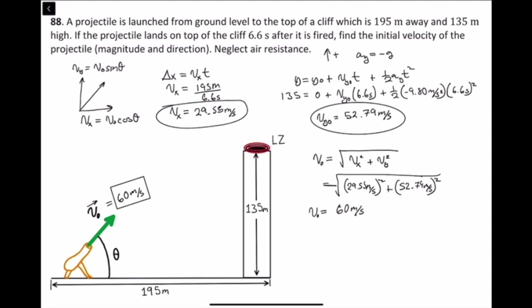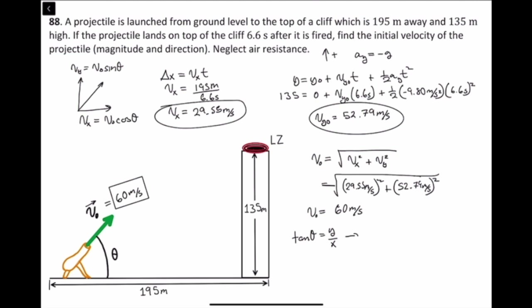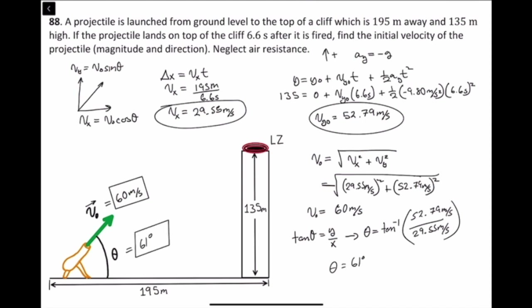To find the direction, we use tangent theta equals y over x. Taking the inverse tangent of the y-component divided by the x-component: arctan(52.79 / 29.55), the angle theta equals 61 degrees. So the magnitude of the initial velocity is 60 meters per second and the direction is 61 degrees above horizontal.